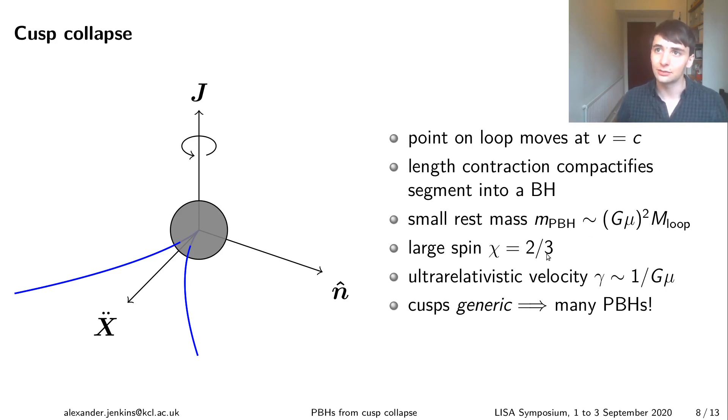There's this interesting result that the spins of these black holes are around two-thirds of the maximum value you can get for Kerr black holes and this kind of universal value is tied to the universal dynamics near a cusp which is determined by the equations of motion of the string. Because the portion of the loop that collapses is moving so quickly compared to the rest frame of the loop you end up with a black hole which is moving at ultra relativistic velocities and because as I mentioned cusps are a generic feature of cosmic string loops these primordial black holes are generic as well and you get many many more of them than in the circular collapse scenario.